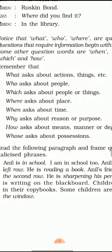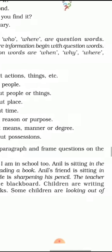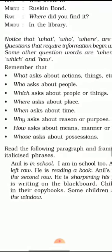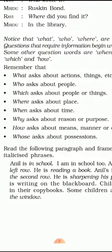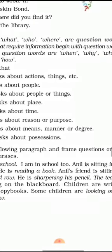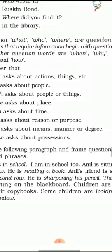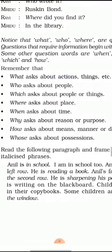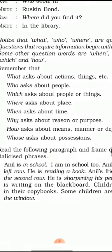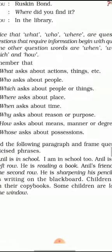He is reading a book. The question is: What is he reading? Answer: He is reading a book. Anil's friend is sitting in the second row — question: Where is Anil's friend sitting? He is sharpening his pencil — question: What is he doing? Next, the teacher is writing on the blackboard — question: Who is writing on the blackboard? Answer: The teacher.